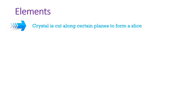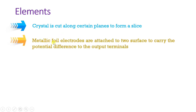Now for the elements: the crystal is the main element, cut along certain planes from a slice. If you want larger amplitude or a more sensitive microphone, you can connect a series of crystals. Increasing the number of crystal elements increases the sensitivity of the microphone. Metallic foil electrodes are attached to the surface to carry the potential difference to the output terminal.